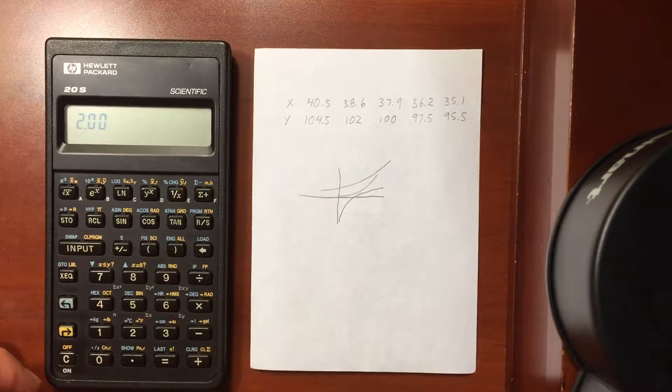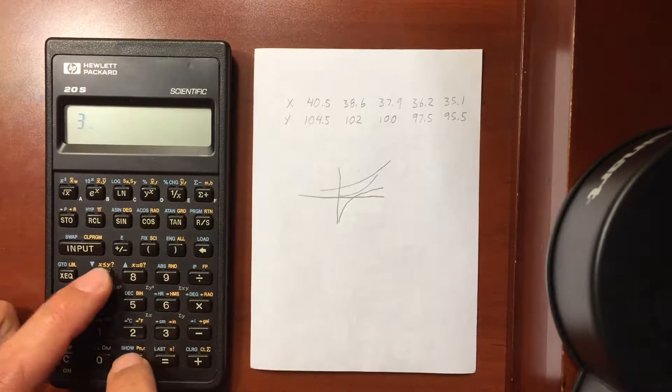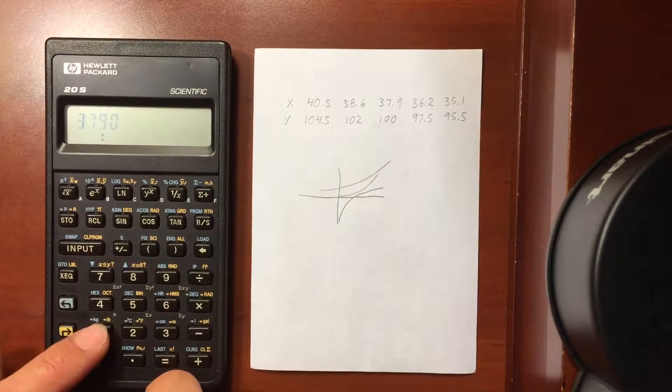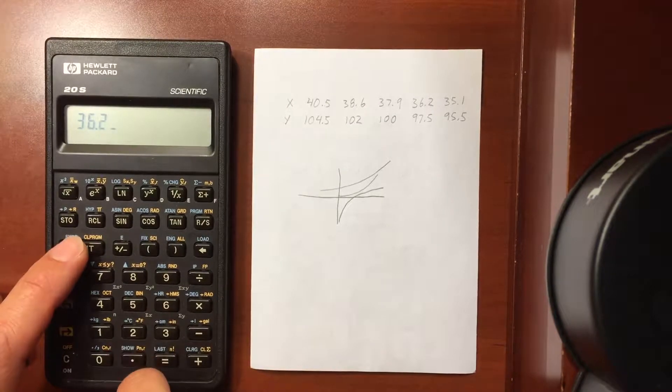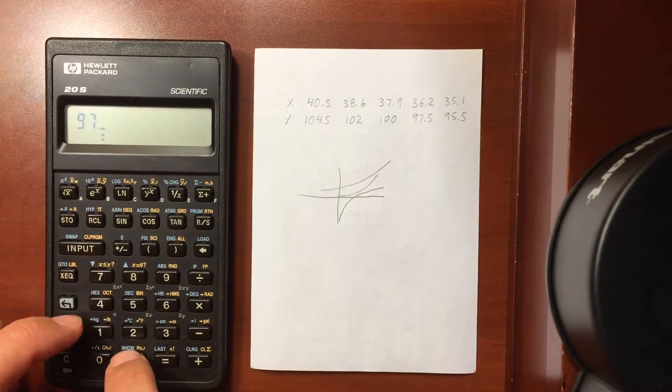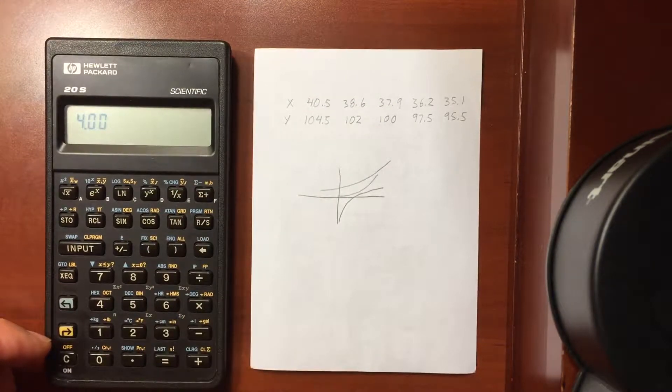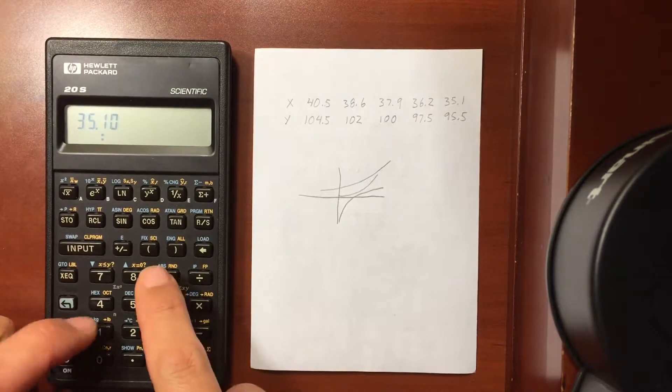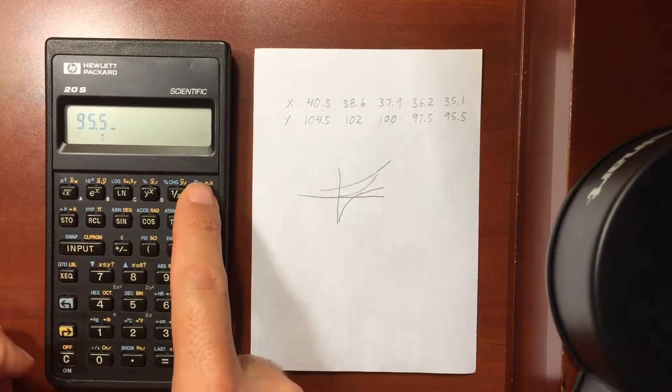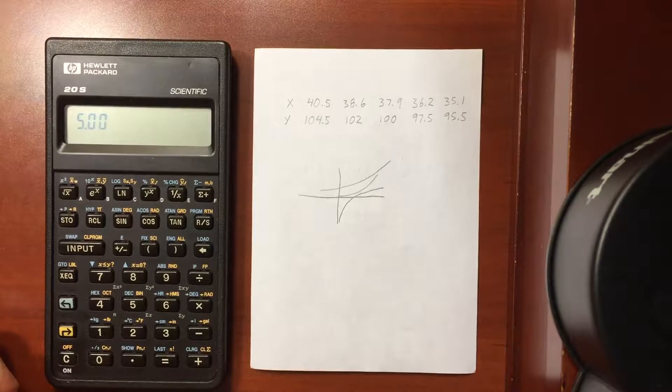Continuing: 37.9 and 100, store it. 36.2 and 97.5, store it. And 35.1 and 95.5. So I have five values entered into my statistics register.